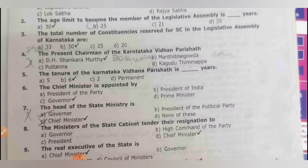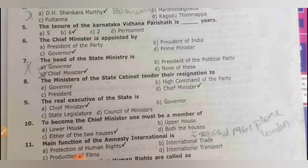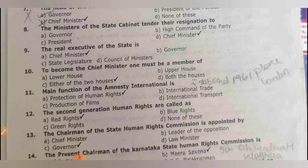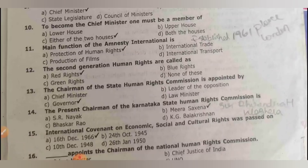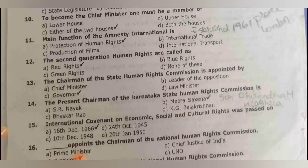The present chairman of Karnataka is Basava Raju. The tenure of the Karnataka Vidhan Parishat is 6 years. The chief minister is appointed by the governor. The head of the state ministry is the governor. The real executive of the state is the chief minister. To become chief minister, one must be a member of either the upper house or the lower house.